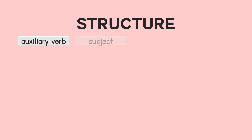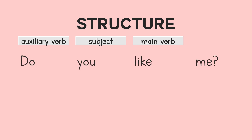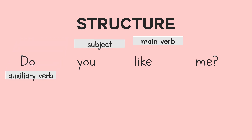How do we construct an Interrogative Sentence? We simply follow a pattern. For example, we can use the pattern auxiliary verb plus subject plus main verb. For example, do you like me? In this sentence, the auxiliary verb is do, the subject is you, and the main verb is like.